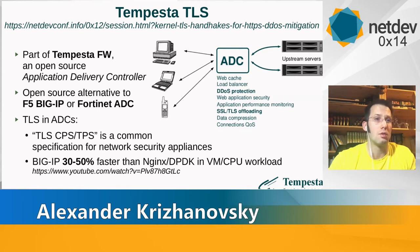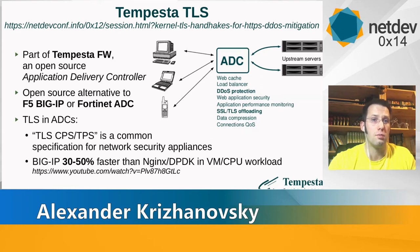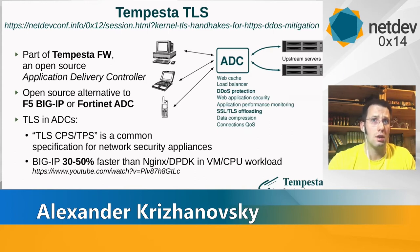There is a video from an F5 engineer who compared performance of BigIP and NGINX on top of DPDK using a software IP stack inside a virtual machine using only CPU. In that measurement, BigIP wins by about 50% in transactions per second, because BigIP uses their own TLS implementation. So TLS is very crucial for us.